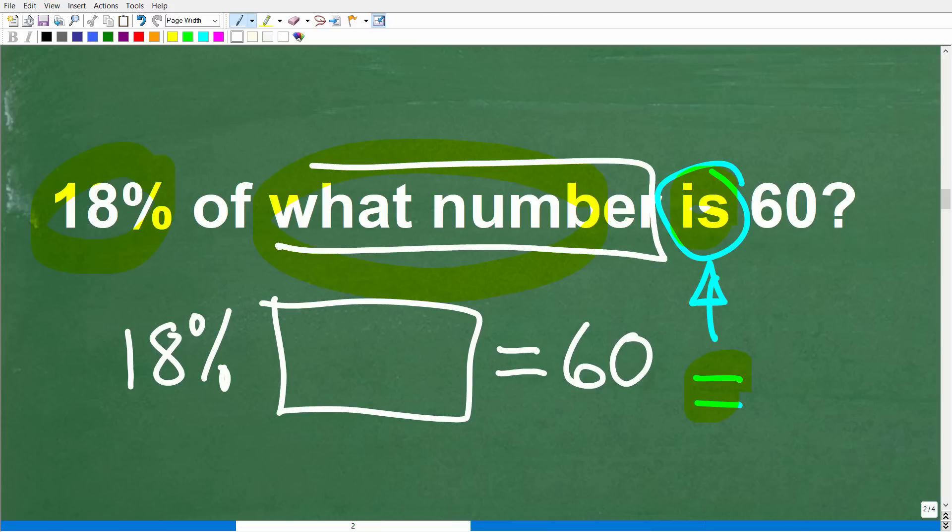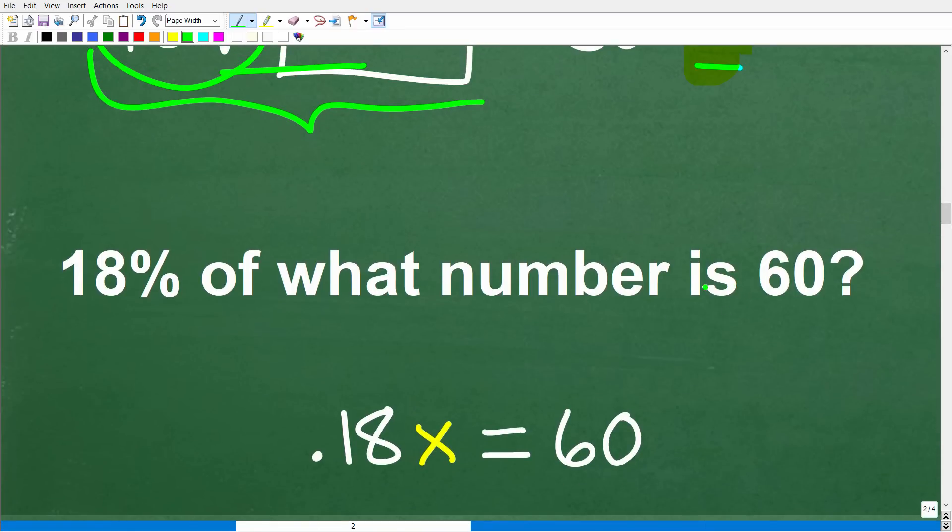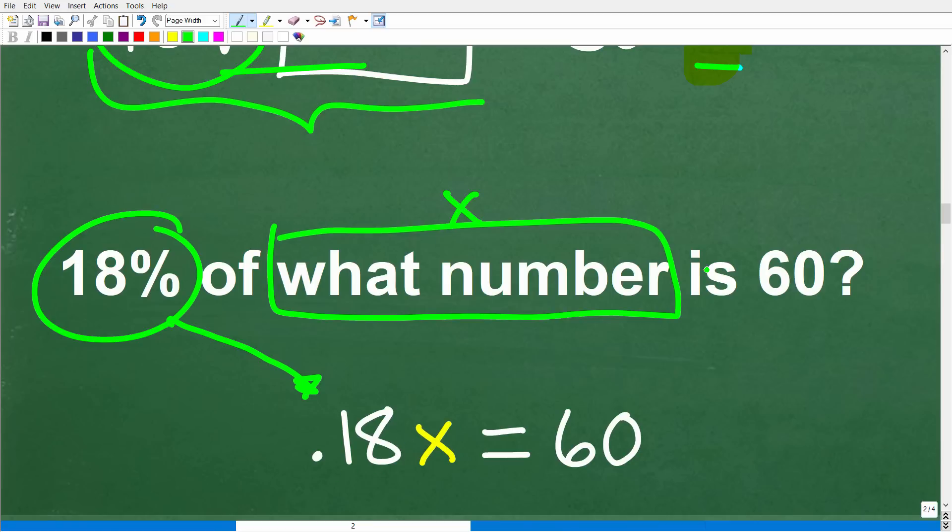Now when we don't know the value of a number, well, we can use algebra to solve this problem. So what we can do here is simply use a variable like x to represent this number. So 18% of some number x is equal to 60. So how do we find a percent of a number? Well, easy, we're going to change this to a decimal and then multiply by x. So here is what this equation is going to look like. So 18% of what number is 60? So algebraically, 18% is the same thing as 0.18. So 18% of this mystery number x is 0.18x and it's equal to 60. So here is our simple equation, 0.18x is equal to 60.